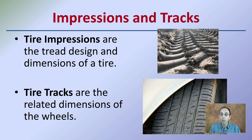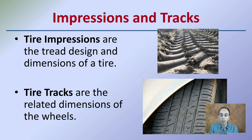Looking at impressions and tracks: tire impressions are the tread design and dimensions of the tire, while tread tracks are related to the dimensions of the wheels. It's important to take these into consideration along with exterior components when trying to identify a particular tire or make a match.